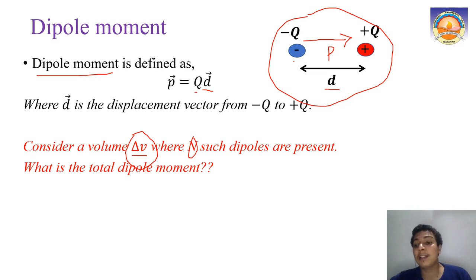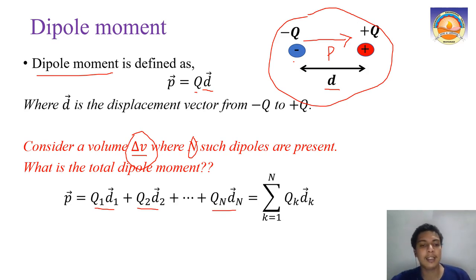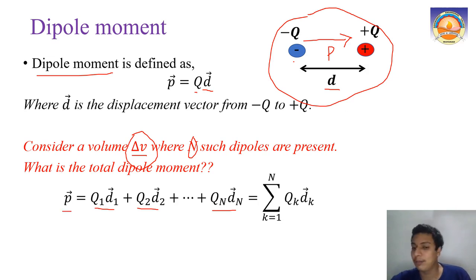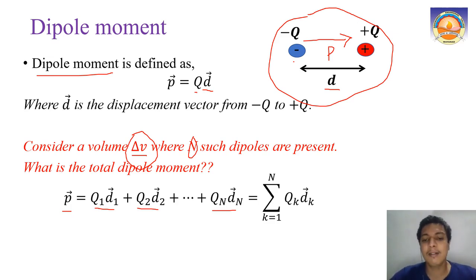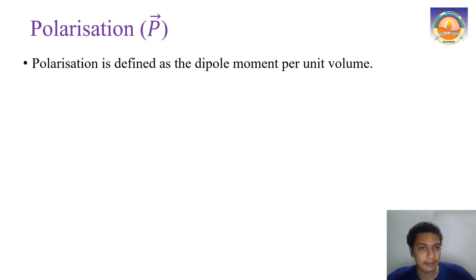The total dipole moment in that volume is the vector sum: p = q₁d₁ + q₂d₂ + ... + qₙdₙ, or written as a summation Σ(k=1 to n) qₖdₖ, since different atoms may have different charges — for example in a mixture.